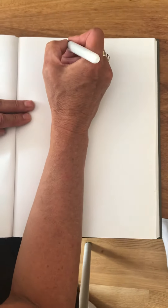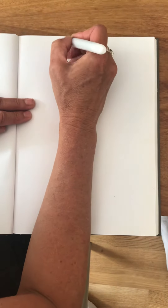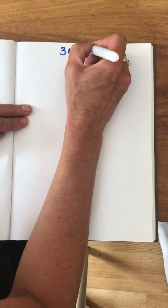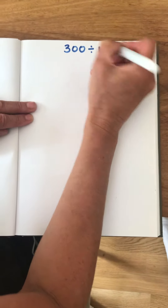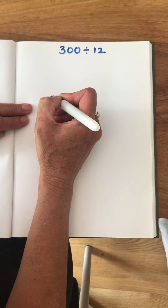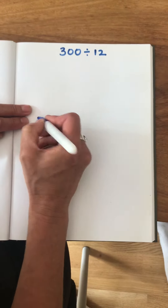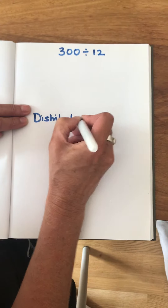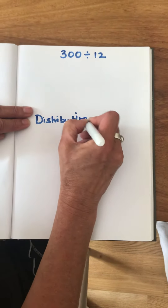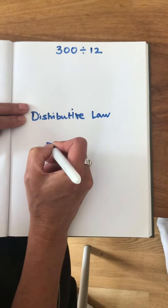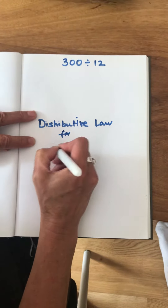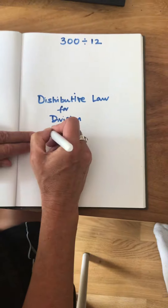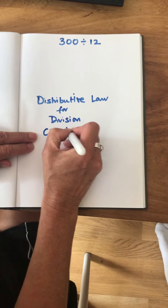We're looking at division strategies and our calculation is 300 divided by 12. Our first strategy involves using the distributive law for division. Sometimes this is called chunking.